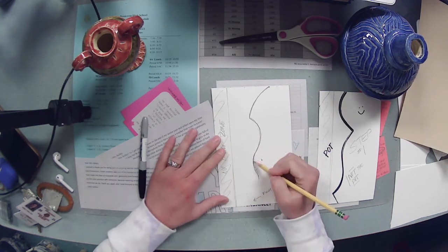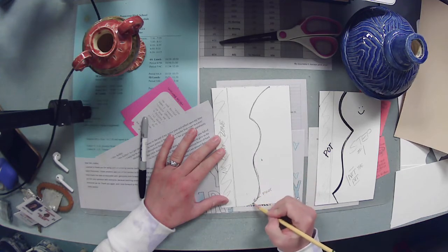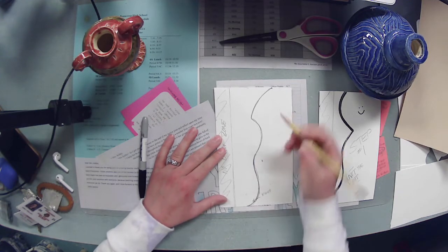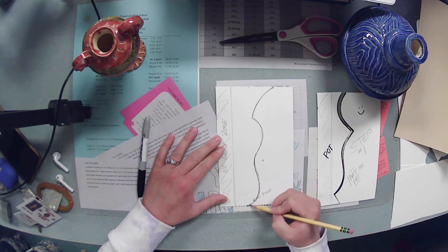Or you can not do a foot and have the bottom of your pot come all the way to the table which is totally fine. When you're drawing this tracer out though the lip has to be all the way at the top of the tracer and the foot touches all the way at the bottom.